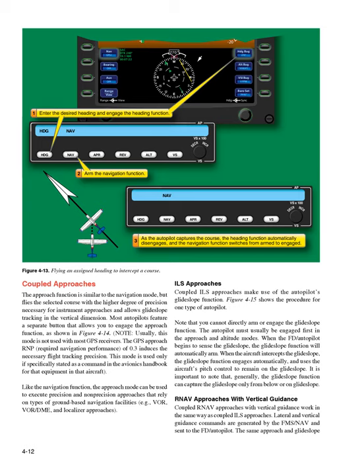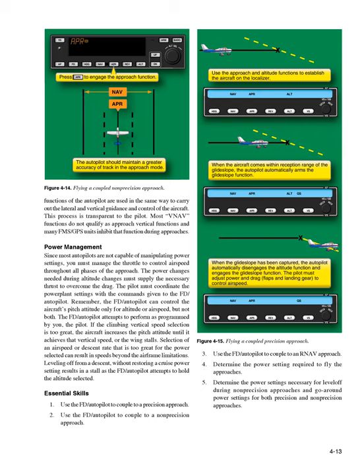Coupled ILS Approaches. Coupled ILS approaches make use of the autopilot's glide slope function. You cannot directly arm or engage the glide slope function — the autopilot must usually be engaged first in the approach and altitude modes. When the FD/autopilot begins to sense the glide slope, the glide slope function will automatically arm. When the aircraft intercepts the glide slope, the glide slope function engages automatically and uses the aircraft's pitch control to remain on the glide slope. Generally, the glide slope function can capture the glide slope only from below or on glide slope. RNAV approaches with vertical guidance work in the same way — lateral and vertical guidance commands are generated by the FMS/NAV and sent to the FD/autopilot.